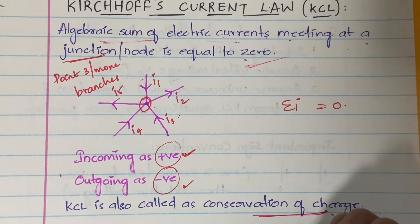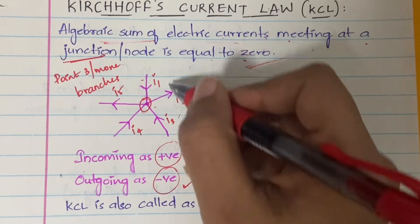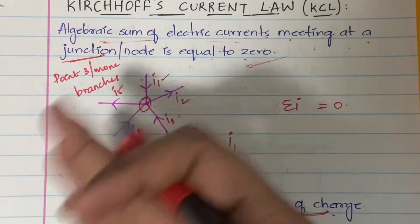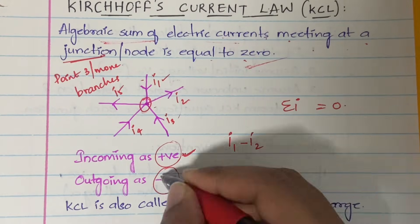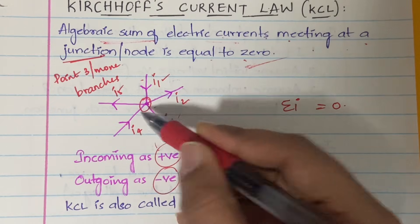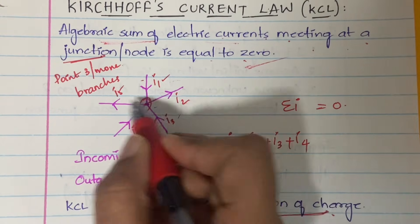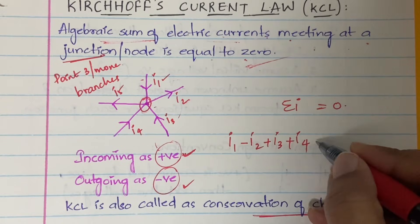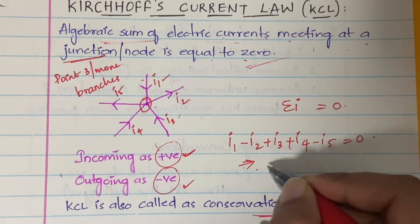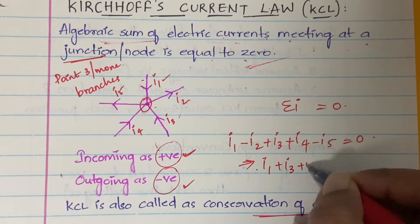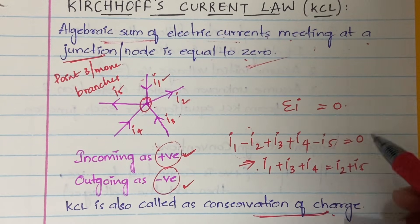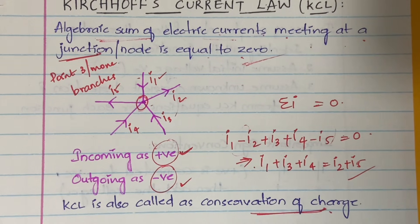Here, i1 is the incoming current so it is positive. i2 is going outside so it is minus i2. i3 is coming inside so plus i3. i4 is also coming inside so plus i4. i5 is leaving the junction so minus i5, and the total equals zero. You can also write this as i1 + i3 + i4 = i2 + i5, by moving the negative terms to the other side.